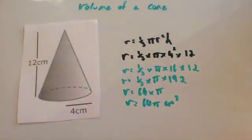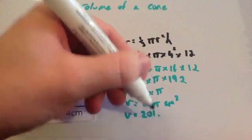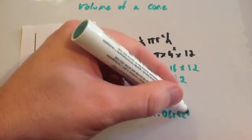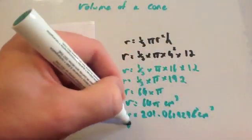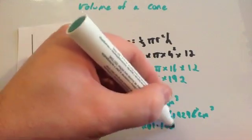You could just write that down, volume equals 201.0619298, I don't know why I didn't round that, centimetres cubed. But you could just round that to 201.1 centimetres cubed.